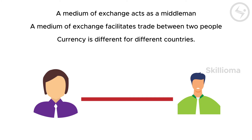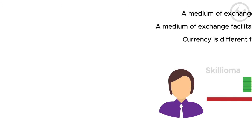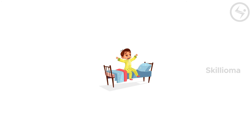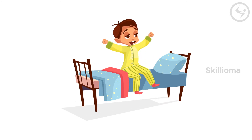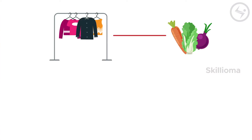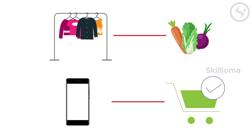Now you may have a question: when different places require different currencies, why not just settle for barter — wasn't it so much better and convenient? Well, was it? Let's find out. Let's say you wake up and find that exchange systems have changed; people are back to barter and notes hold no value. What would you do? Would you exchange your clothes for food, or give away your phone to maintain your livelihood?